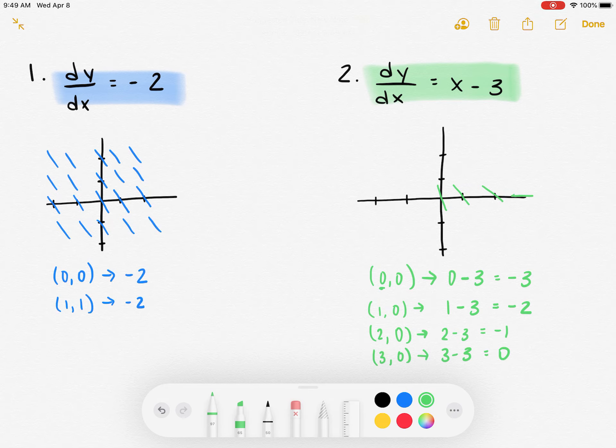Then I notice that because there's no y values in my actual differential equation, if I were going to expand this slope field, I don't actually have to plug in all of these points. Because if I plug in (0,1), I'm going to get the same thing that I got when I plugged in (0,0), because even though my y value is changing, my x value is the same.